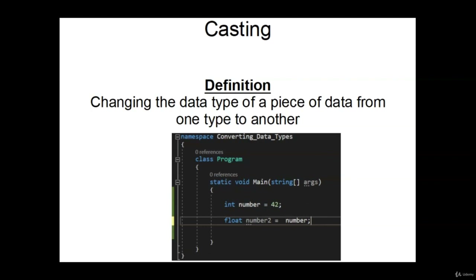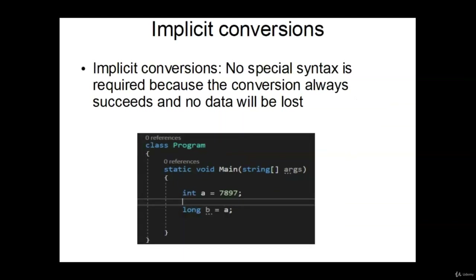In this video, we're going to talk about casting. Casting is when you want to change the data type of specific data from one type to another. Looking at our example, we have an integer called number equal to 42. We create a float called number2 and assign it the value of number. There are two types of conversions: implicit and explicit. Implicit conversions require no special syntax to convert the data.